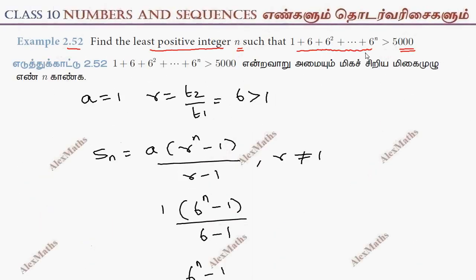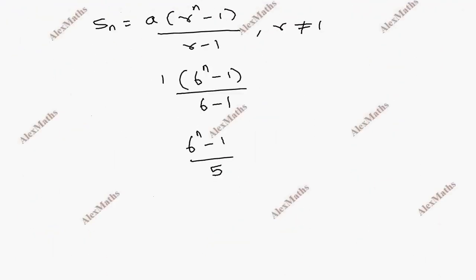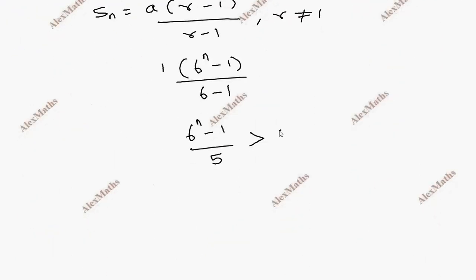the question says it's greater than 5000. If you look at it greater than 5000, then we need to find the n value.